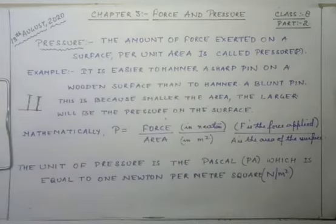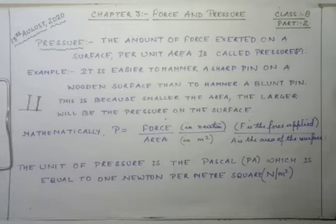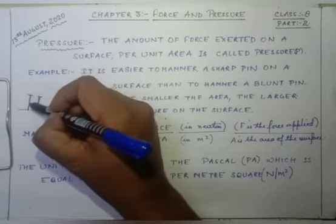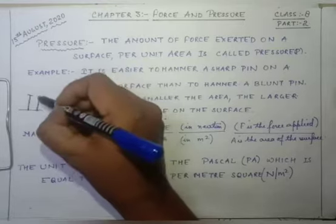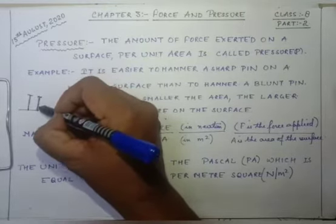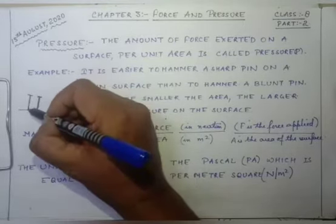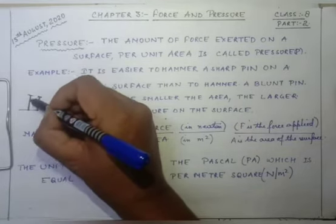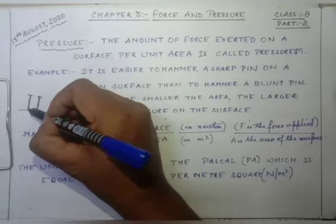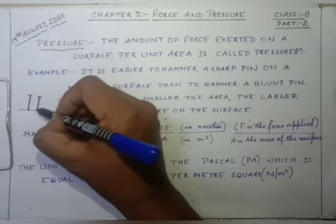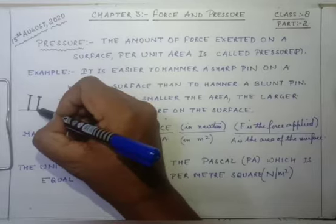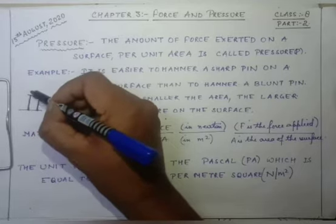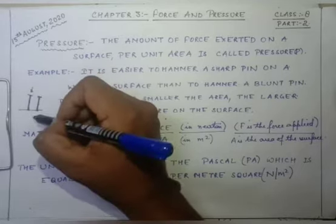It is easier to hammer a sharp pin on a wooden surface than to hammer a blunt pin. Here I have taken a nail with a sharp point and another nail with a blunt point. The area covered by the sharp nail is less compared to the area covered by the blunt nail. So the first concept is: less the area, more will be the pressure.